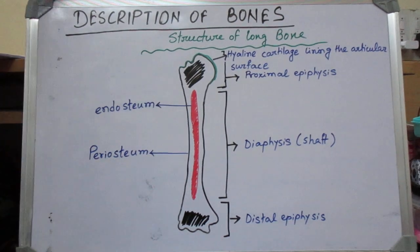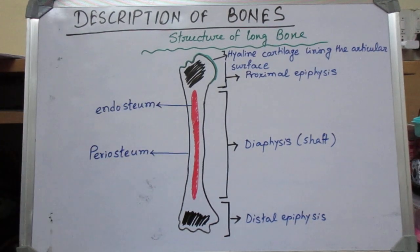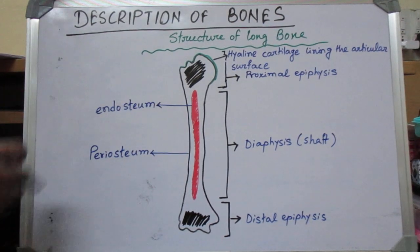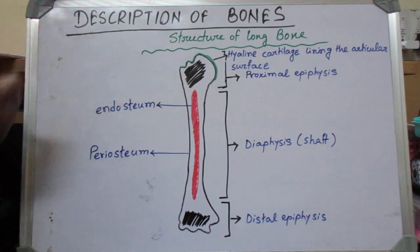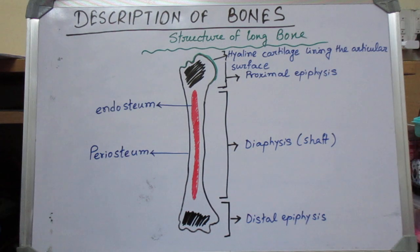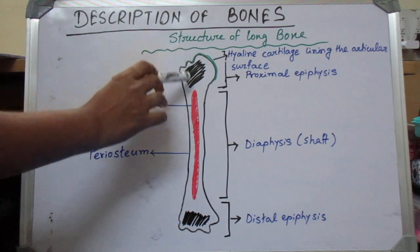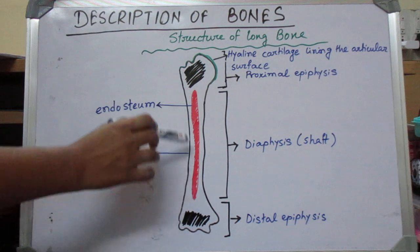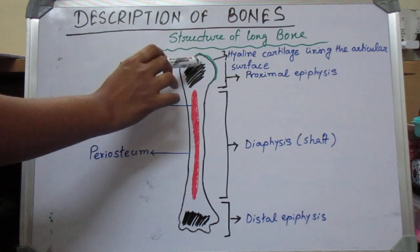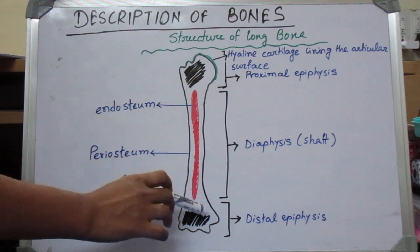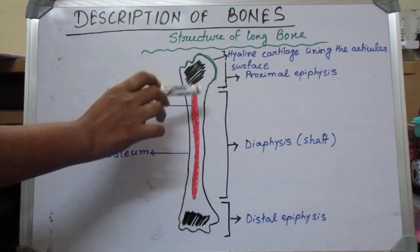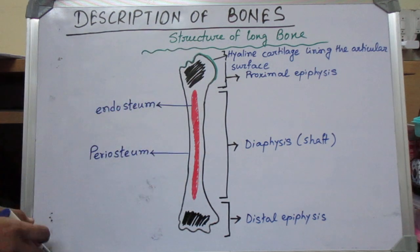Hi all, now we will know about the description of bones — the structure of a long bone and what parts are there. Any long bone has an upper end, lower end, and shaft.